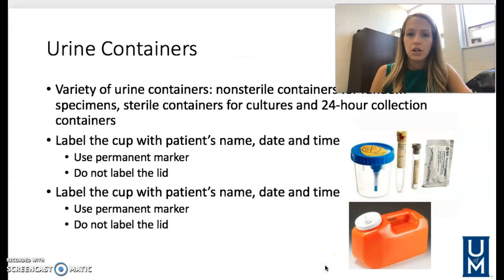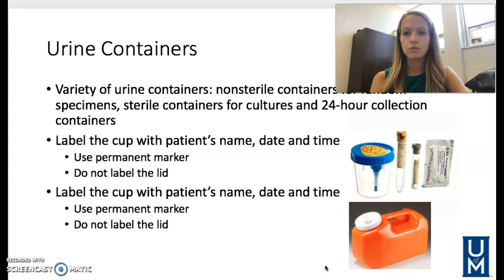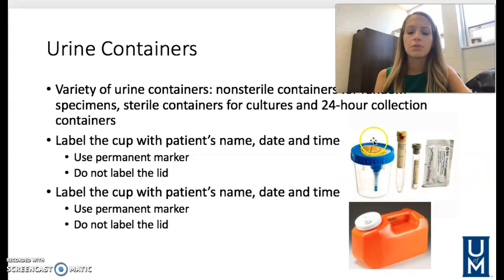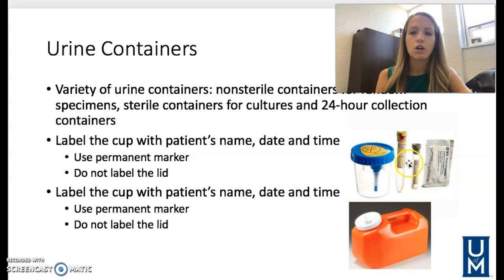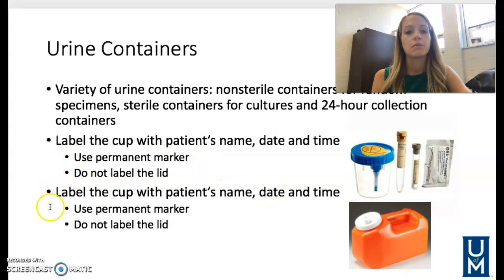There are different urine containers that we use: non-sterile containers for random specimens, sterile containers for cultures, and a 24-hour collection container. This non-sterile sample cup is used for normal urinalysis, this tube is a sterile culture tube, and this is a 24-hour collection jug because you're collecting all the urine over 24 hours, so it needs to be a much larger container. Remember to label the specimen cup and not the lid.